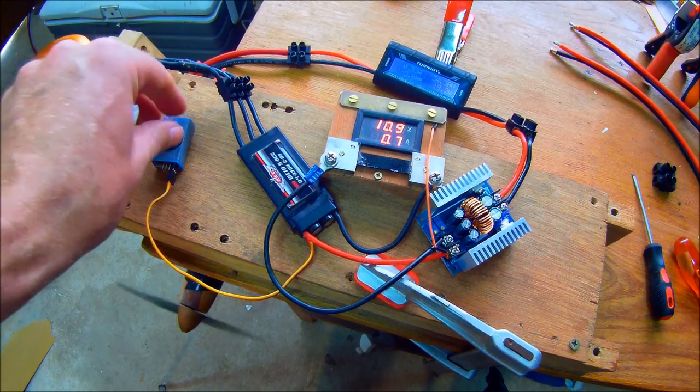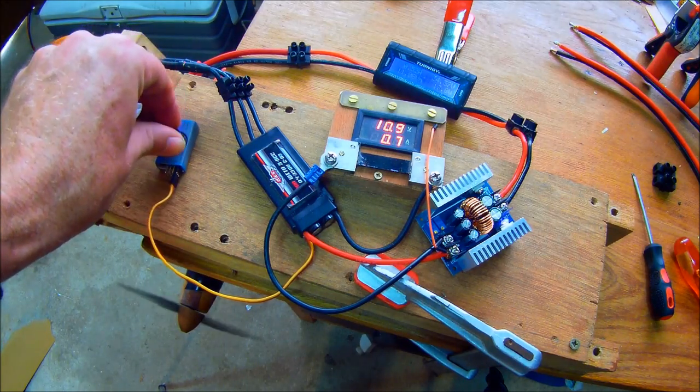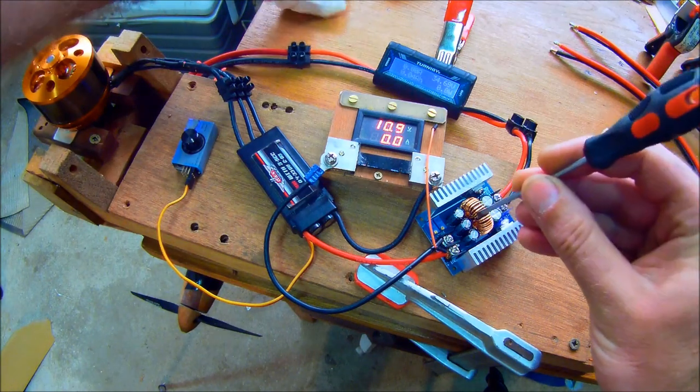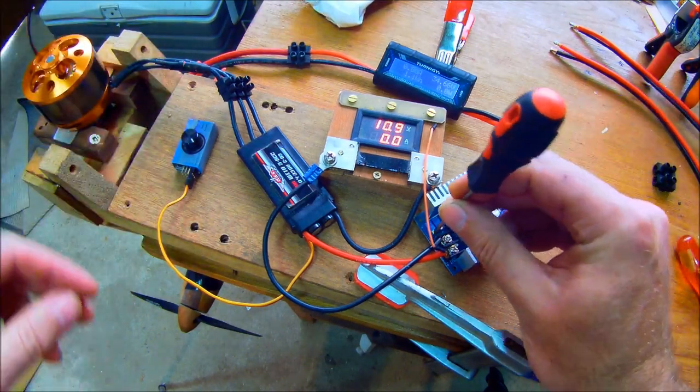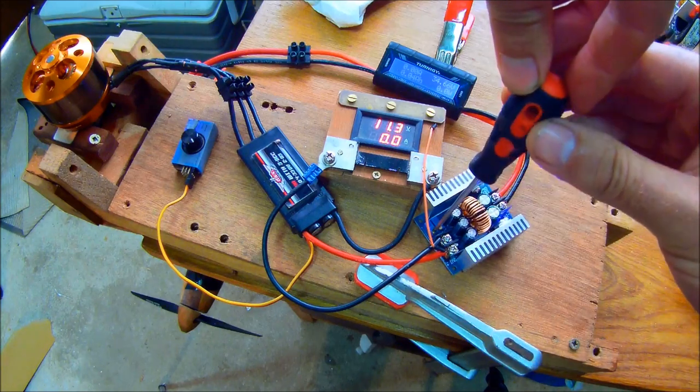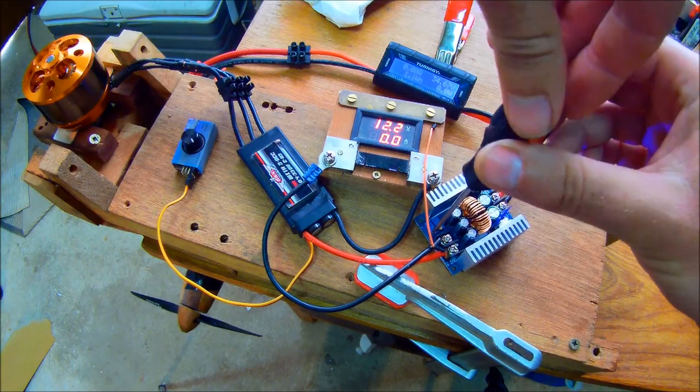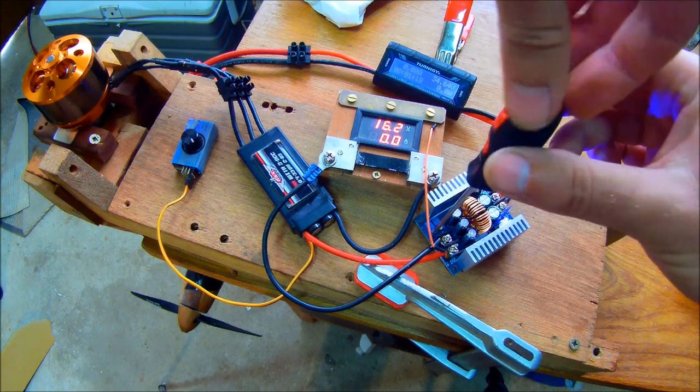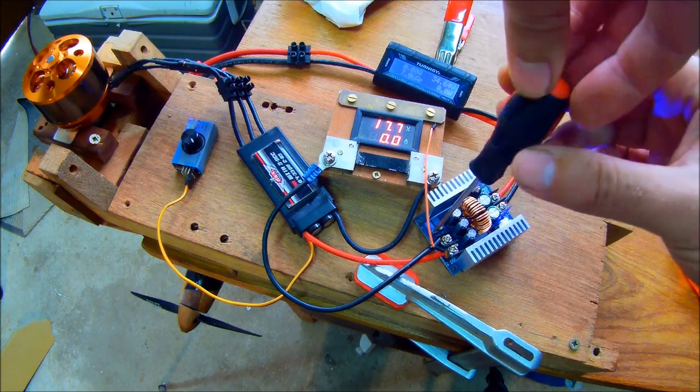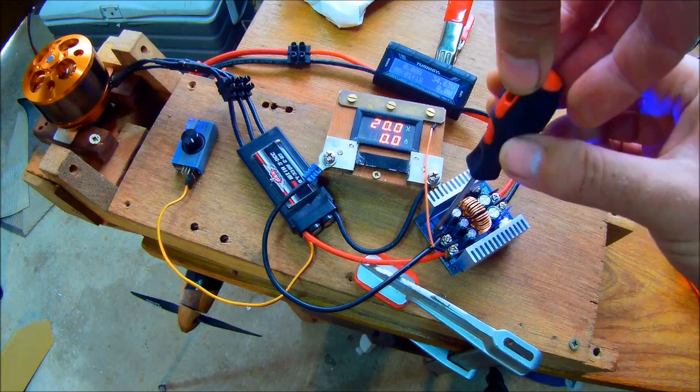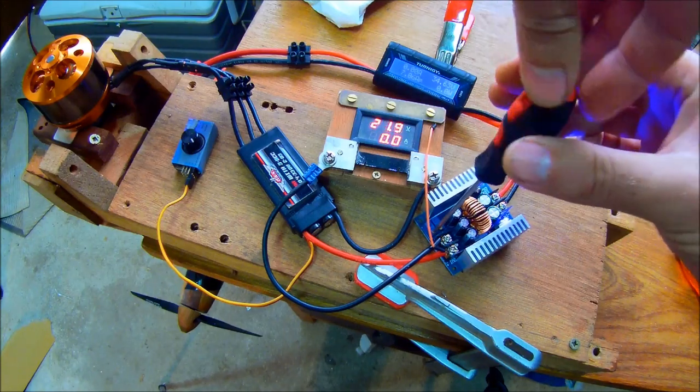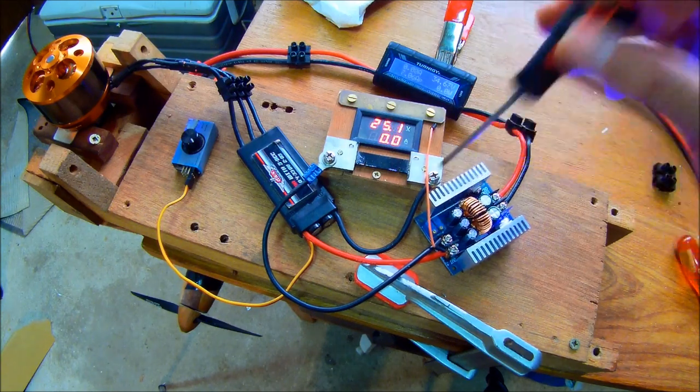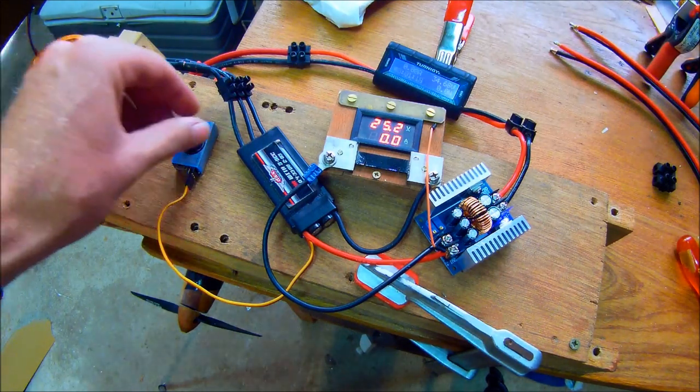Right, so that was at a nominal 11 volts output on the buck converter. I can also adjust the buck converter very easily - just this trim pot gives you roughly a volt per turn. Clockwise will increase your voltage. Let's get that up to 20 volts. Actually, let's take it past, get some decent speed on the motor. 25. Let's go.